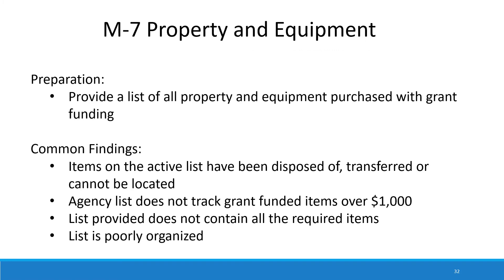For property and equipment, we are going to ask to see a list of all property and equipment purchased with OCA grant funding. Whether we're doing this test remotely or in person, we still would like to see the list. Remotely, we pick five or six items off the list and ask that you send us a photograph where the tag and/or serial number is easily identifiable. When on site, we select a larger sample and need to view those items and confirm they're stored and on hand. Common findings include items listed as active that have already been disposed of, transferred, or can't be found, and agencies not tracking grant-funded items over $1,000 as required, or the list lacking required information such as the grant number.